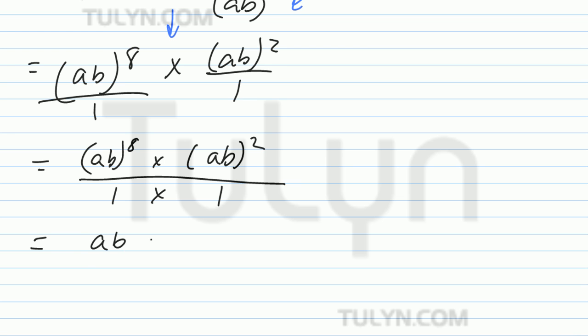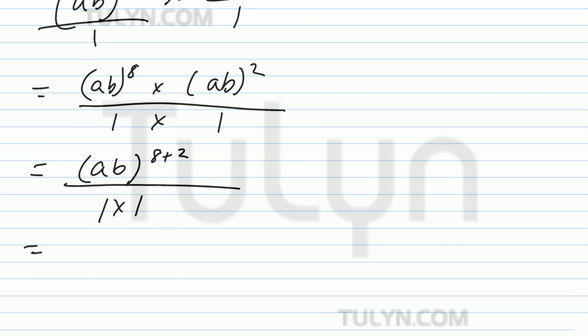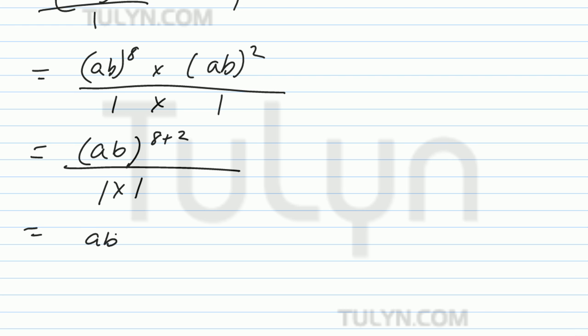Same base being raised to the power, so just add their exponents. 1 times 1. Ab to the 8 plus 2 is ab to the 10th. Being the same base, 1 times 1 is 1, so it's ab to the 10th power.